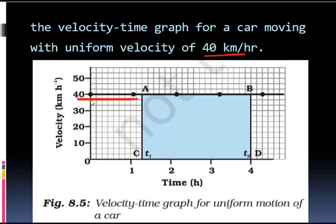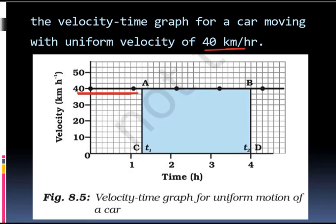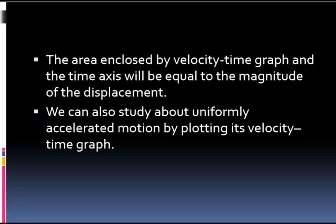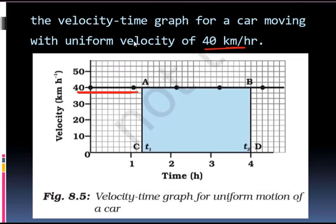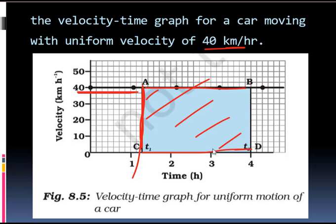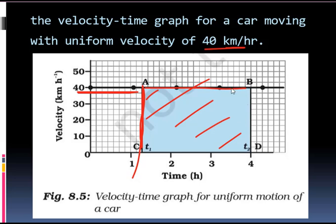So this is 40 kilometres per hour, which is the velocity of the body — it remains constant. Now, the area enclosed by a velocity-time graph and the time axis will be equal to the magnitude of the displacement. Here you can see the area enclosed by the velocity-time graph: this is the uniform velocity, that is 40, and this is the time taken. This region is the displacement of the body.